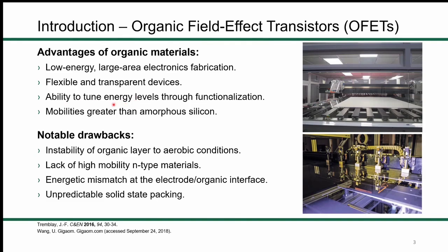There are several reasons why we would want to use organic materials in electronic devices. The main ones include low-energy large-area fabrication, devices can be flexible and transparent, and the energy levels or properties of the material can be tuned through functionalization — which is in theory relatively simple, and in practice maybe not so much. The mobilities of organic materials have also surpassed that of amorphous silicon, so organics have largely replaced many applications amorphous silicon once had.